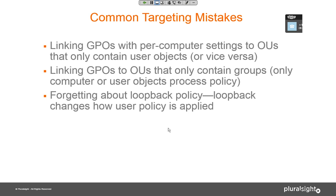The use case for loopback is primarily things like kiosk systems, remote desktop servers, Citrix/XenApp-type systems — multi-user environments where users log on to a shared or specially controlled system. It can cause confusion if loopback is enabled on a computer. I bring this up not as a common mistake per se, but I do see situations where you're not getting the expected user policy and it turns out somebody has enabled loopback on that computer.